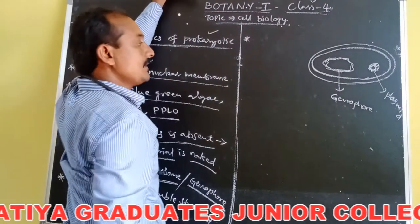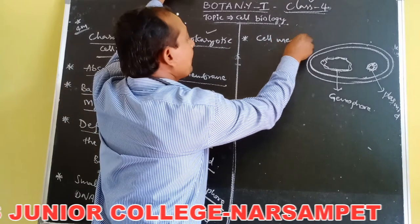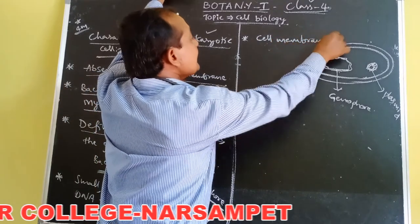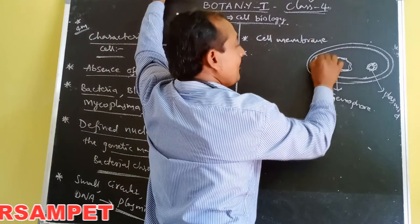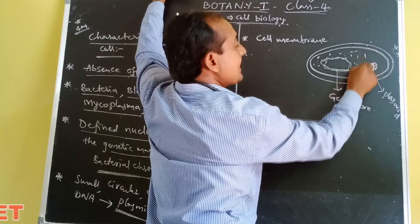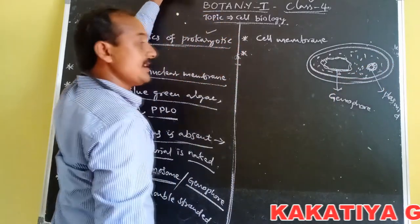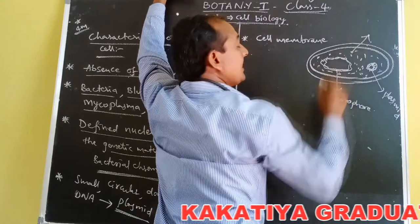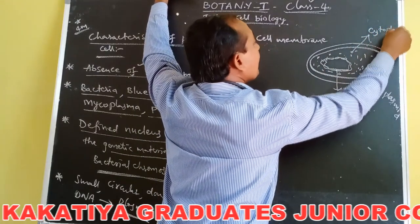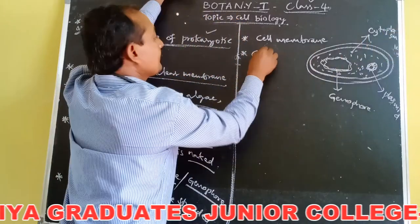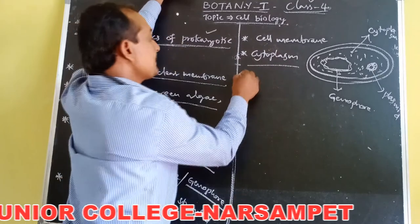Each bacterium is surrounded by a cell membrane. Inside the cell membrane, they are filled with a fluid substance called cytoplasm. The fluid substance present in the bacterium cell is called cytoplasm.